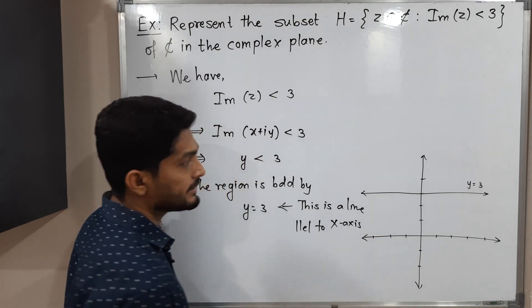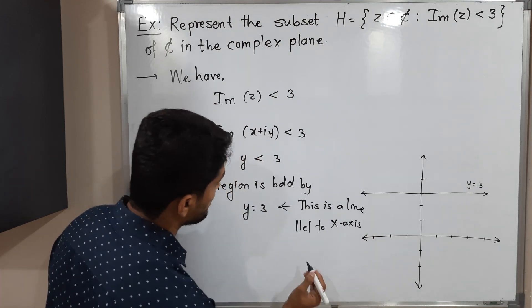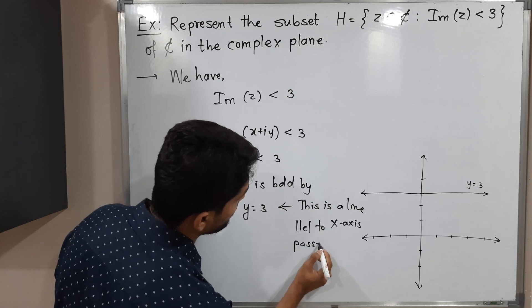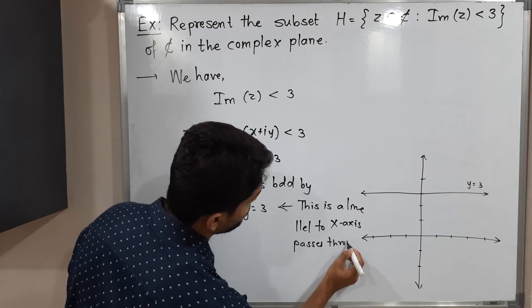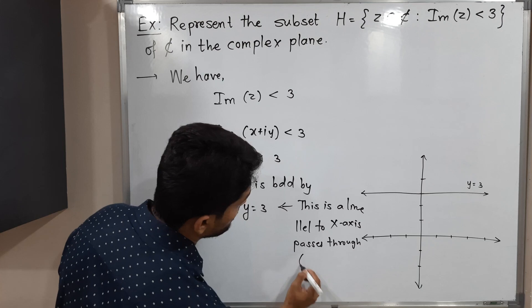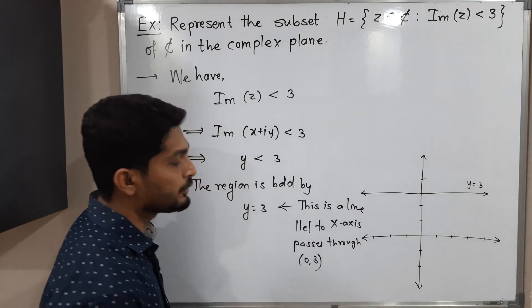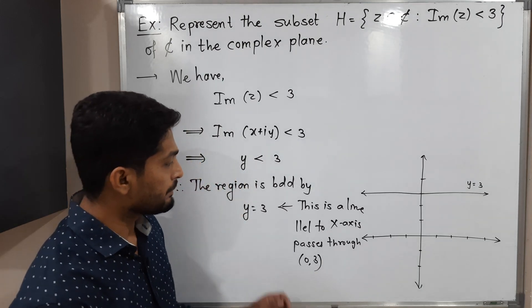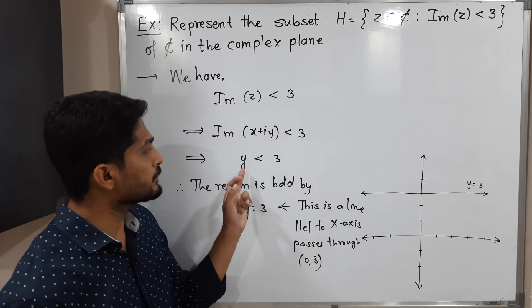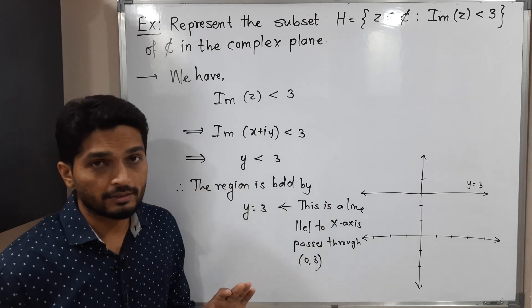You can say x-axis or real axis. It passes through (0,3), or you simply can mention 3. So that means this is the line we have, and see, actually the condition is y is less than 3.